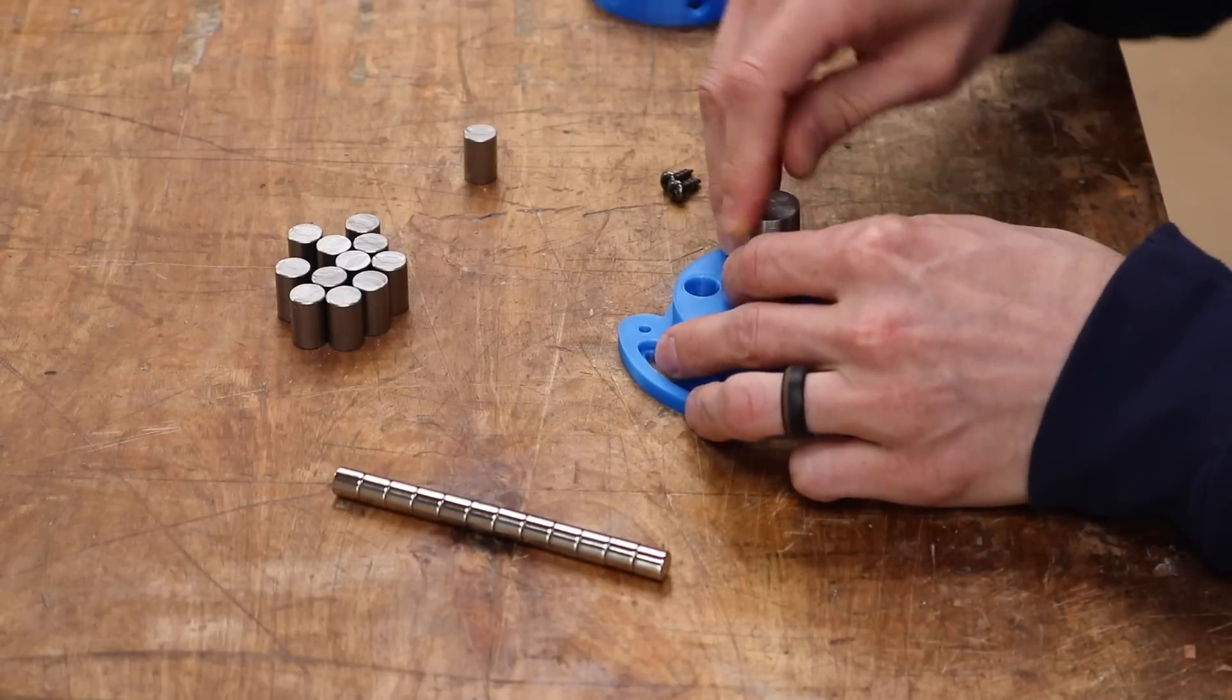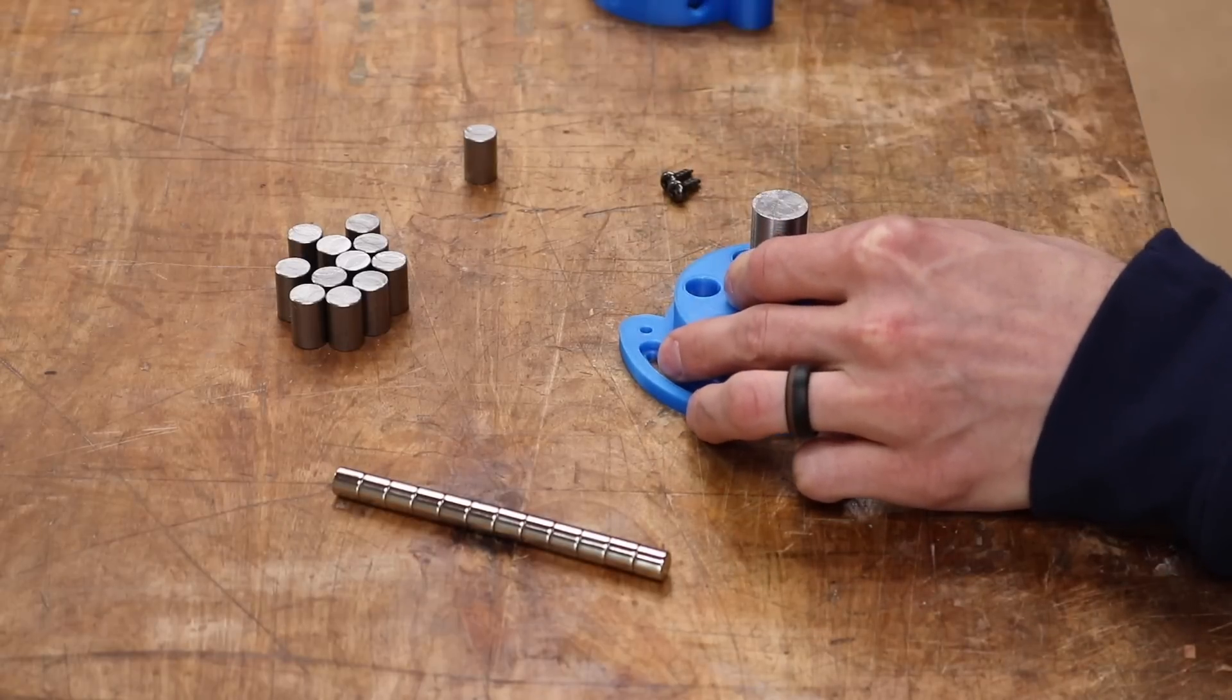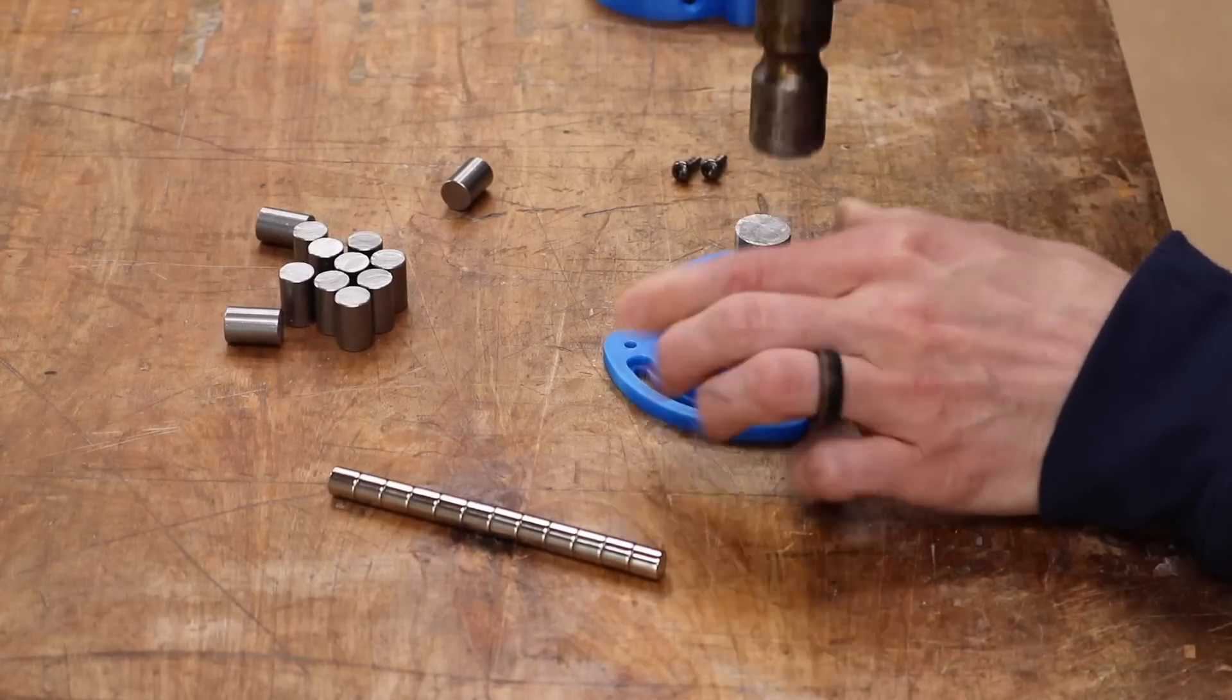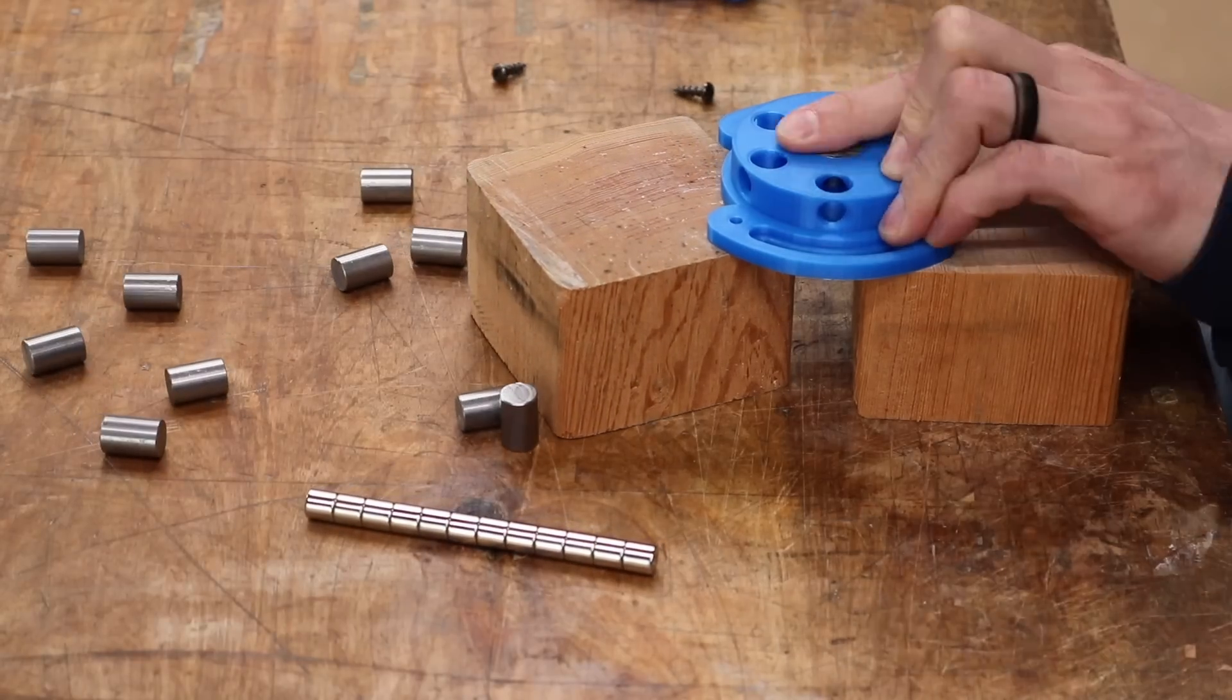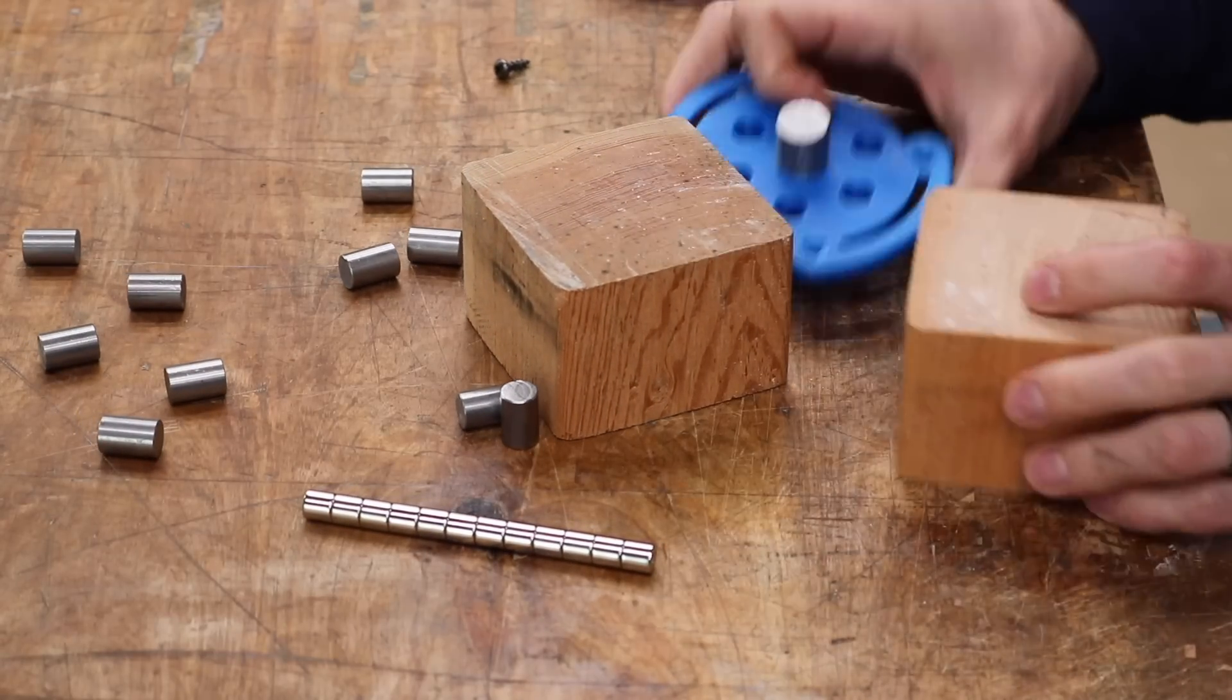So now the first step in assembling is pounding in the center steel rod to the base so that it's flush with the bottom section of the base that's going to make contact with the metal that you're anchoring this to.